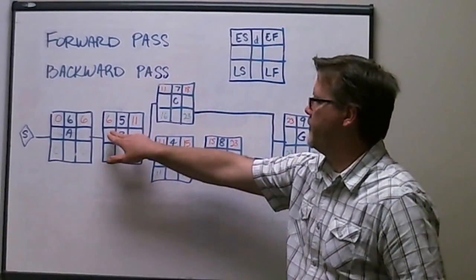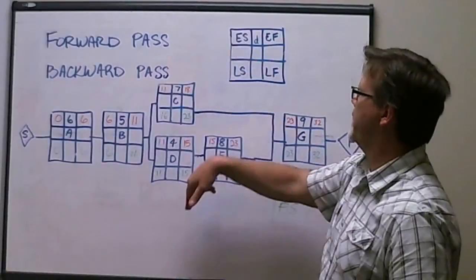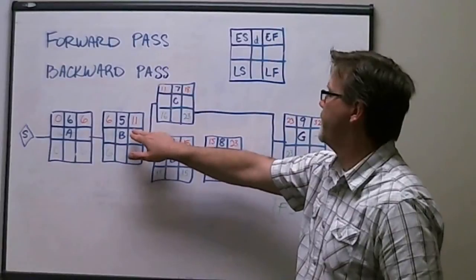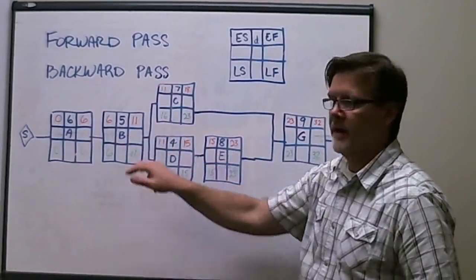So let's start with B. If day six is our early start date, and it's a duration of five days, we've got an early finish date for activity B of day 11.